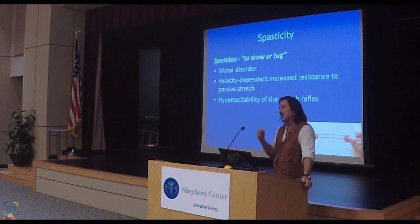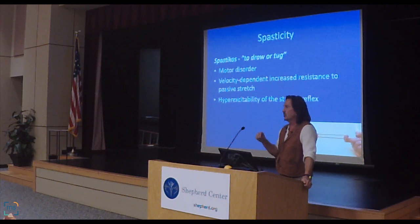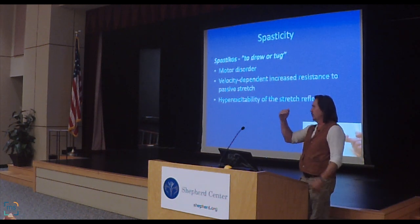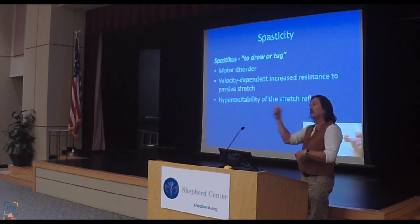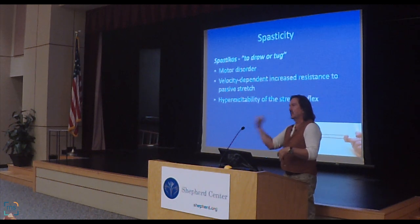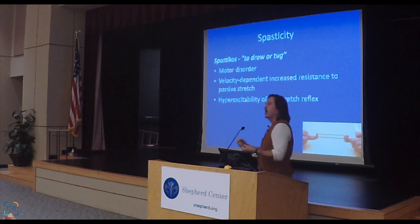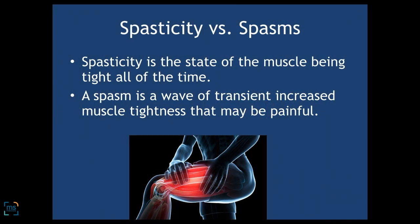We tend to see a hyper excitability of stretch reflexes. Stretch reflexes are when you tap a tendon — like in your knee or in your arm — you get a reflex where you get a little jerk. We see hyper excitability of that in spasticity.